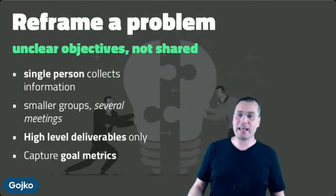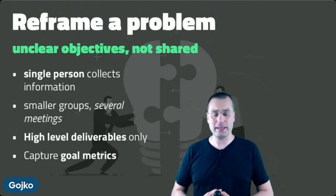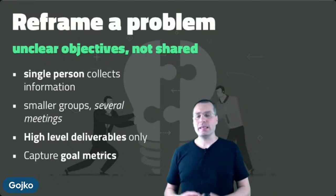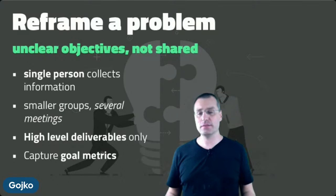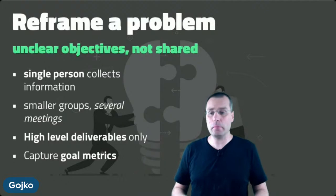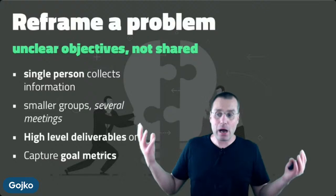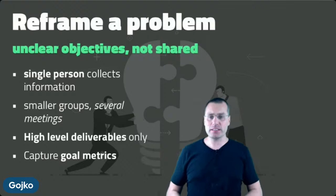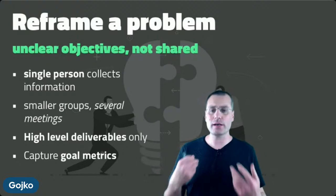Instead of thinking about whose behavior to change and how first, think about what potentially useful behavior changes contribute to the goal, then group those into actors. That will drive this part much faster. The second type of context where impact maps tend to be useful is reframing a problem. Unlike focusing delivery where objectives are clear but too many, reframing a problem is necessary where people don't really have shared objectives or they're unclear — for example, a product has been running a long time and a bunch of new features are being added but nobody really knows what's important anymore.